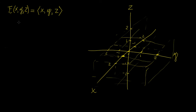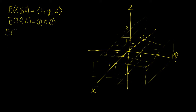Let's start off by drawing the vector at the point zero, zero, zero. This is just going to be a zero vector, so nothing is happening at the origin — we don't have any vectors here, and now we're just going to have to make our way drawing point by point.